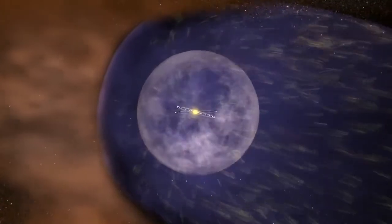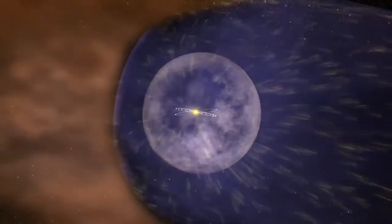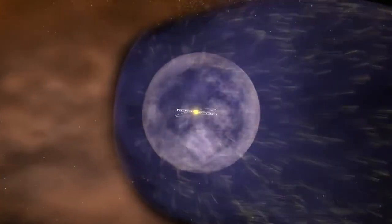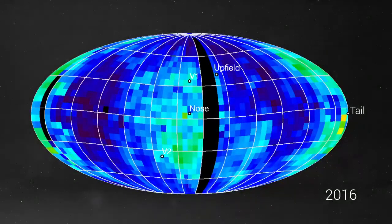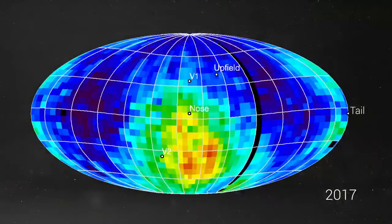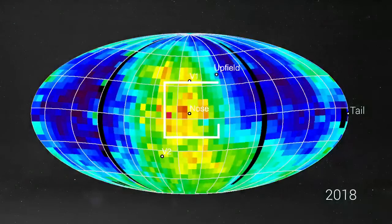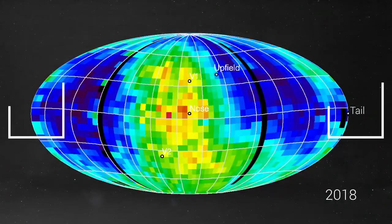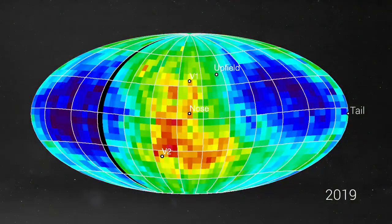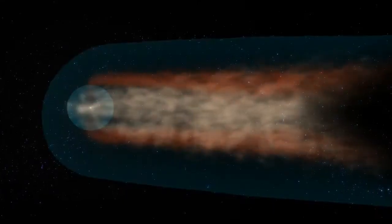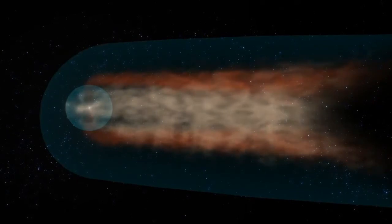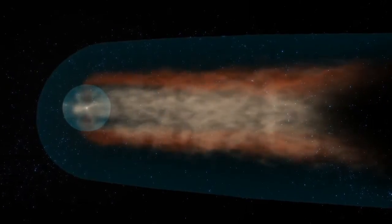From tracking this expansion, scientists found that the nose and tail were not symmetrical. If we compare the maps, ENAs from that big 2014 solar wind increase have returned from the nose, but they haven't returned from the tail yet, suggesting that the tail is much farther away from the sun than the nose. This indicates that the heliosphere looks more like a comet, rather than a round bubble.